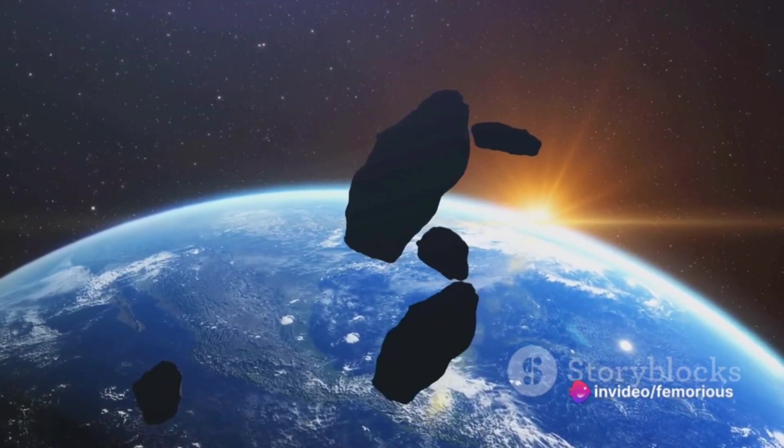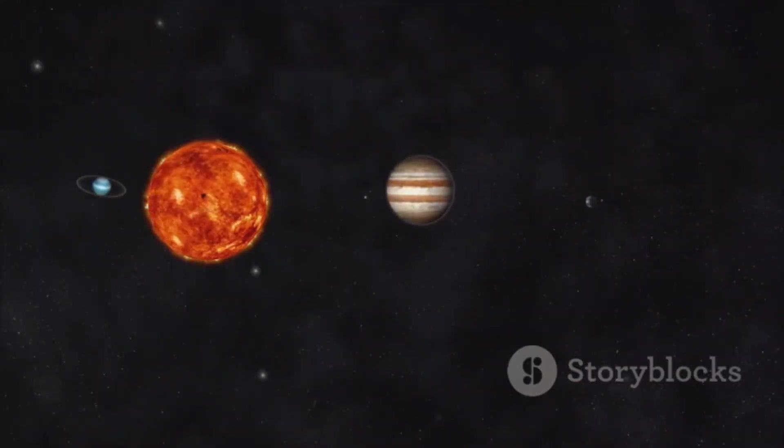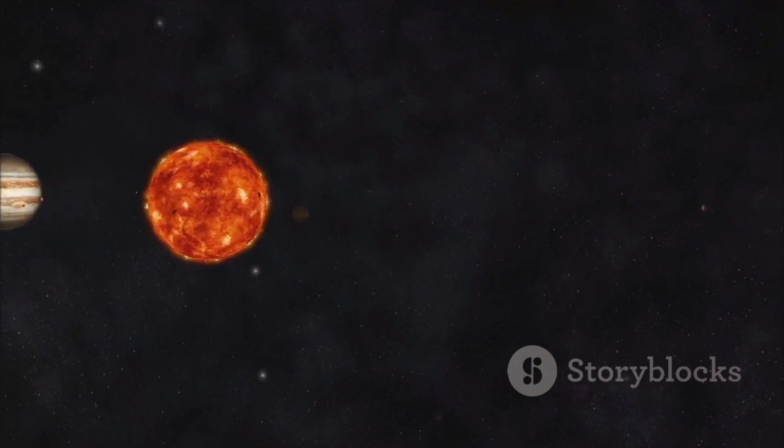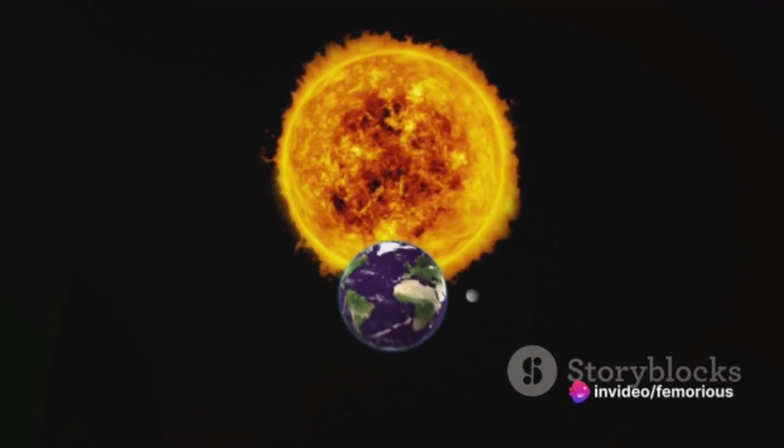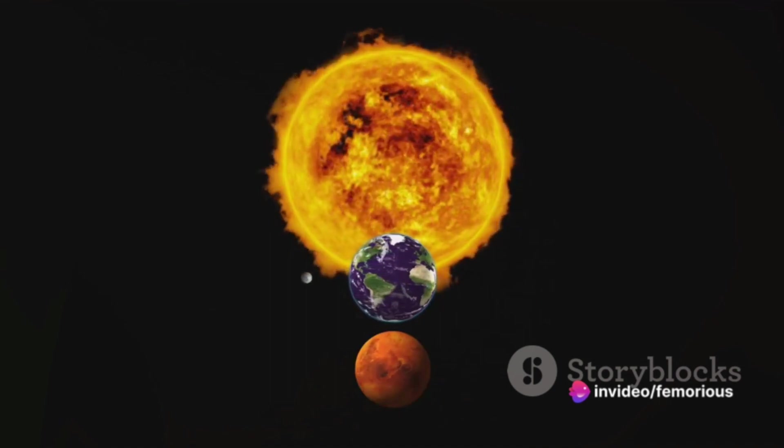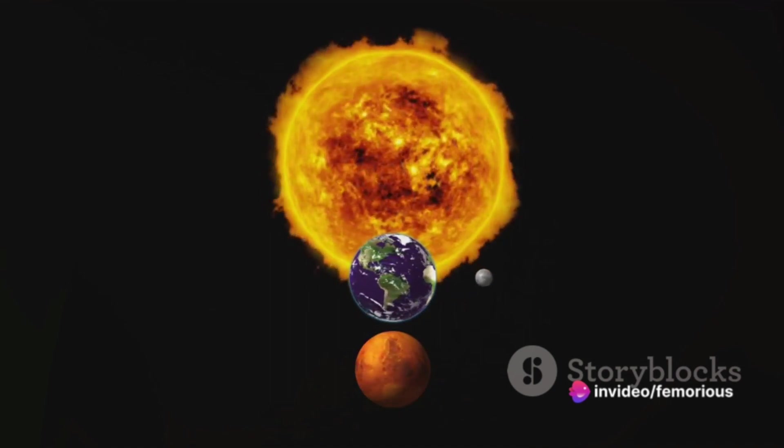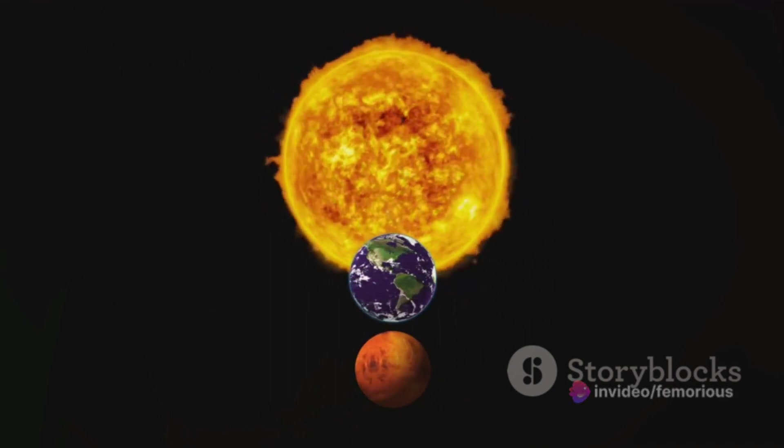The immediate effects would primarily be visual. The familiar five-planet alignment we're so used to seeing would lose a member, leaving us with a four-planet show. However, the immediate impact on Earth and the inner solar system would be minimal, as Mercury holds only a minuscule fraction of the solar system's mass.